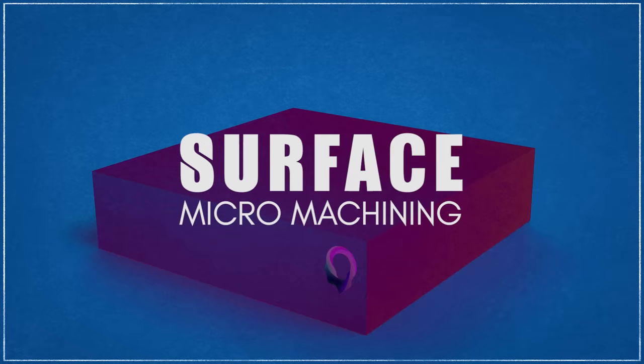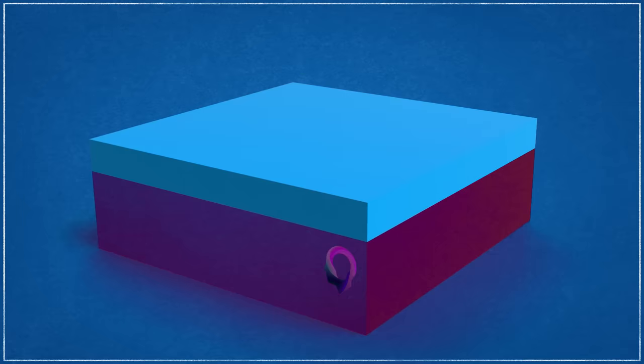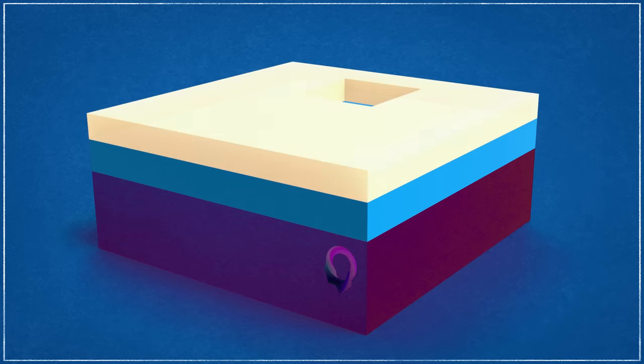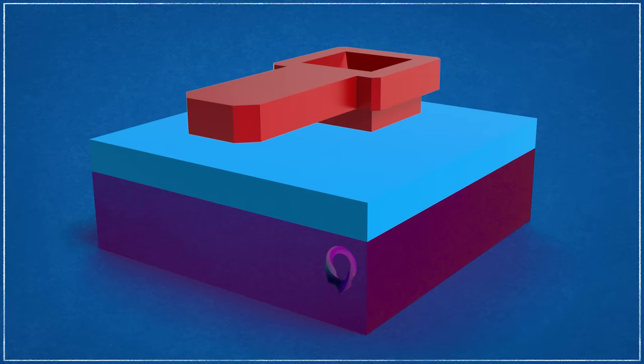Surface micromachining, by comparison, is predominantly additive in nature and is used to create more complex MEMS-based machinery. Material is deposited on the surface of the substrate in layers of thin films. These layers can be either structural or an oxide-based scaffolding known as a sacrificial layer. The scaffolding is then etched away, leaving only the structural layers.